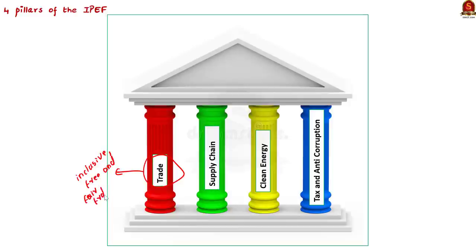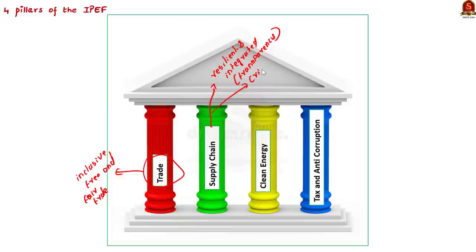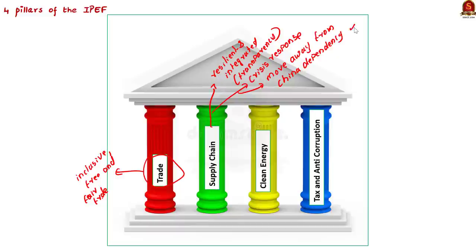The second is the supply chain pillar. The IPEF aims to ensure a more resilient and well-integrated supply chain by incorporating transparency, diversity, security, and sustainability in the Indo-Pacific region. It also focuses on crisis response through better cooperation. This pillar is important because the COVID pandemic showed that the world's supply chain is excessively dependent on China — when supply from China was affected, the global economy suffered. The IPEF aims to create a supply chain that excludes China, reducing its influence on the world economy.